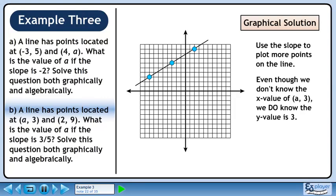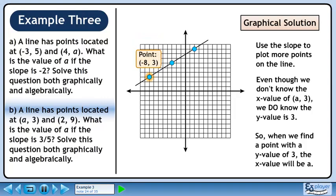Even though we don't know the x-value of (a, 3), we do know the y-value is 3. So when we find a point with a y-value of 3, the x-value will be a. The point (-8, 3) has a y-value of 3. The value of a is -8.